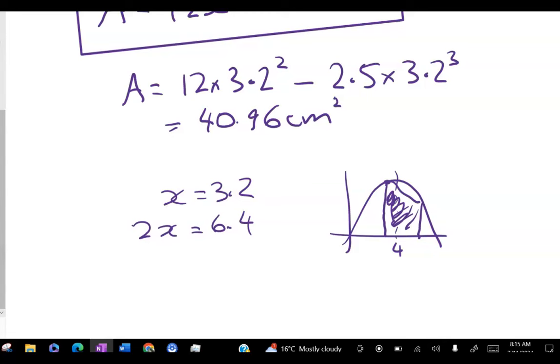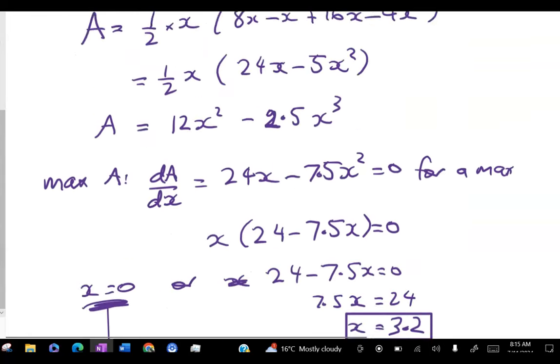So I think we've finished the question. We need to go back to the question and check that we've got it. But we've found an area and it's 40.96 centimeters squared. Now it didn't ask me for all the separate dimensions.